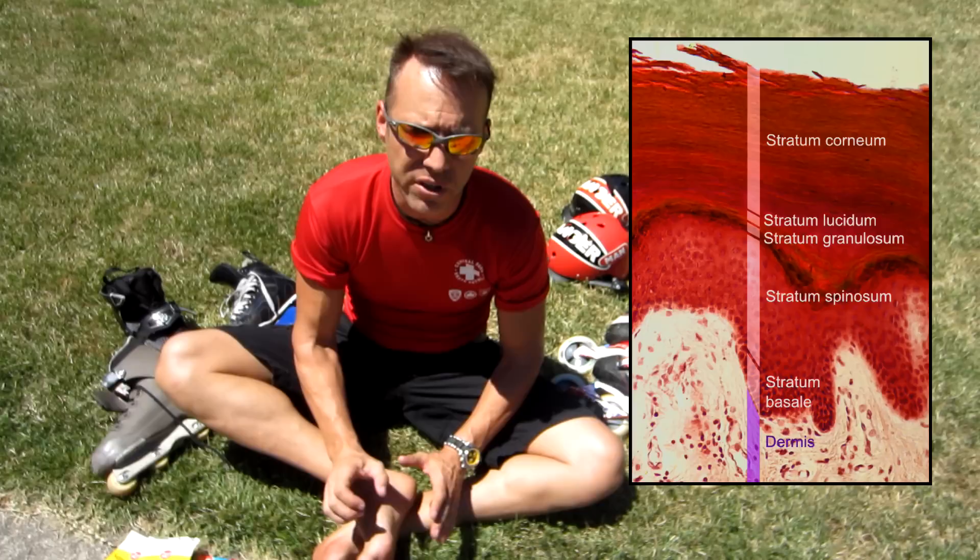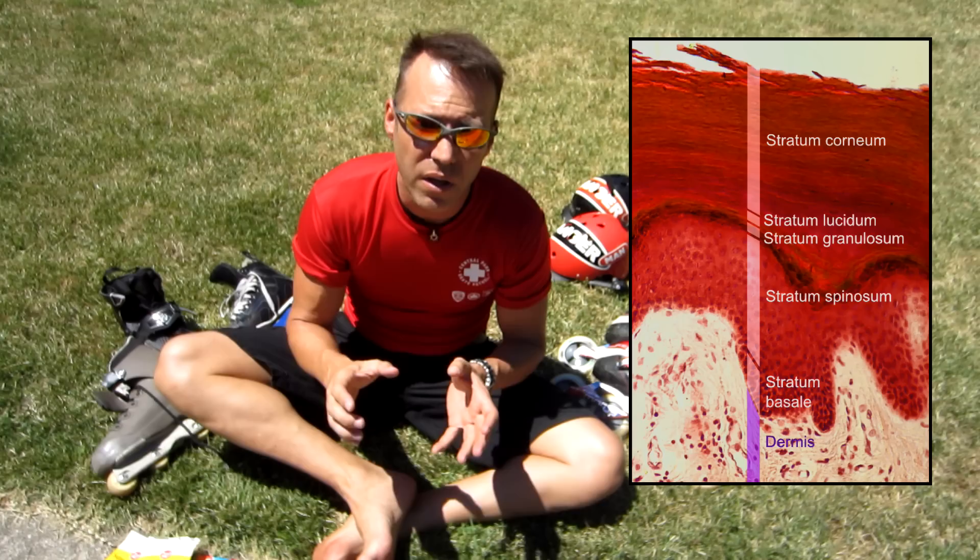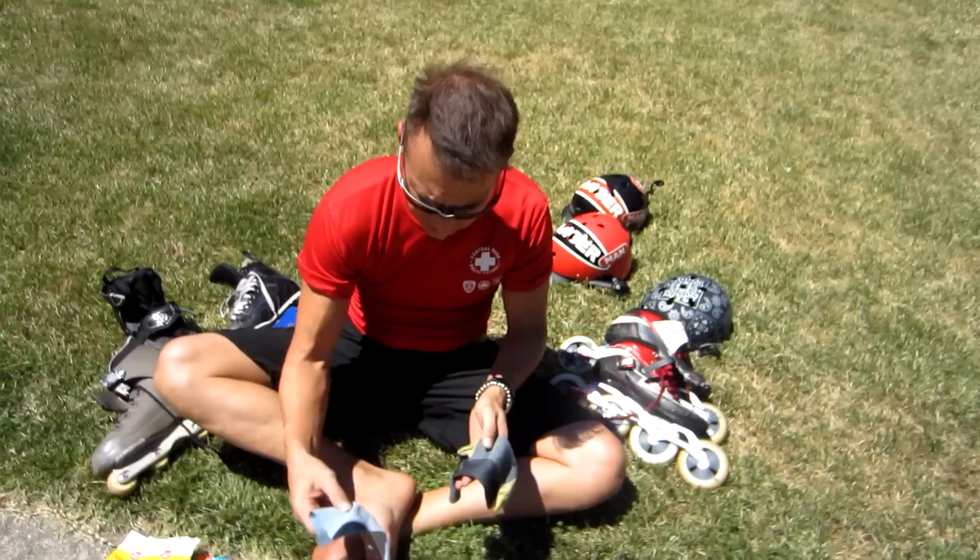What causes blisters? In a word, friction. Friction blisters occur when the cutaneous stratum skin layers shear from the lower dermal layers.